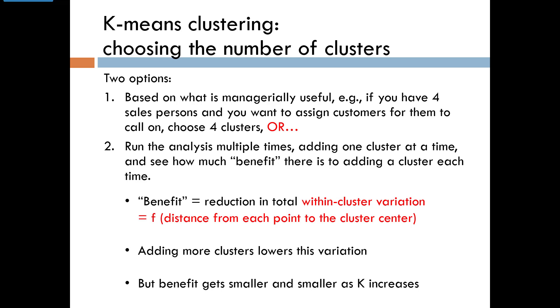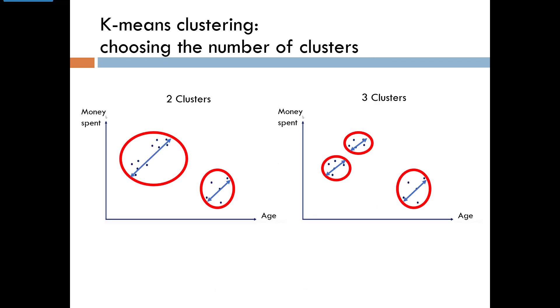Naturally, adding more clusters will always lower this variation since the clusters will be more homogeneous. In the extreme, if every individual is in their own cluster, the total within cluster variation will be zero. But obviously, the reduction will get smaller and smaller as K, the number of clusters, increases.